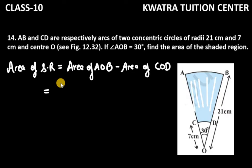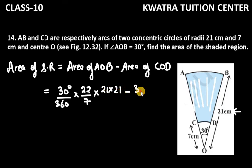So AOB sector, it will be 30/360 × π. Pi we can take as 22/7. Then we have R². So AOB's R is 21, so you have to write 21 × 21. Then subtract 30°/360 × 22/7.